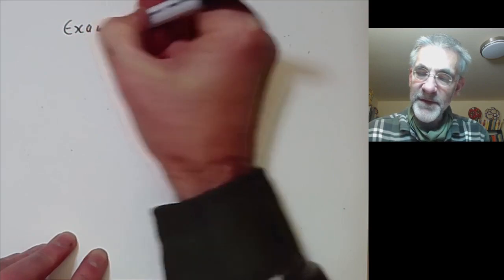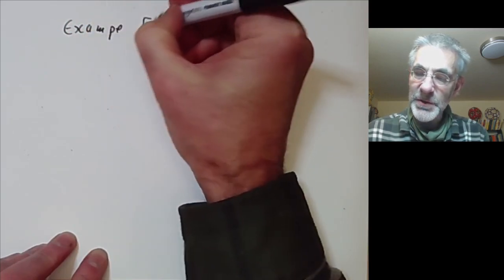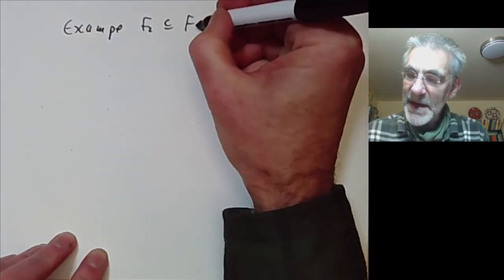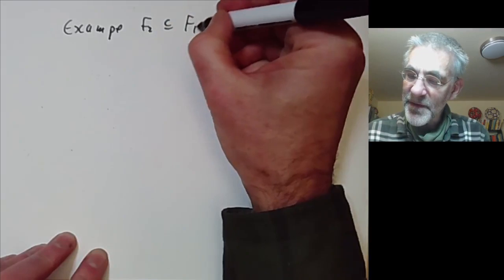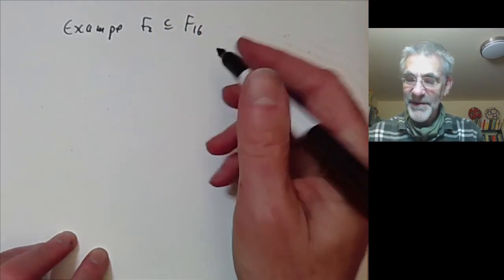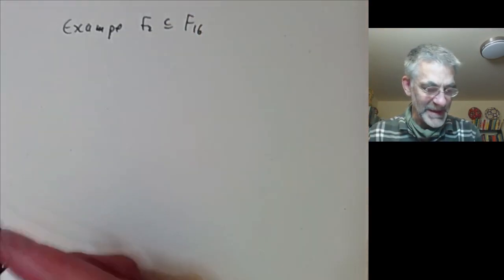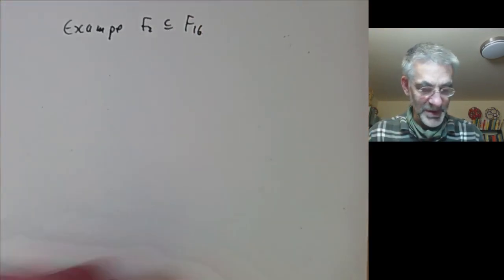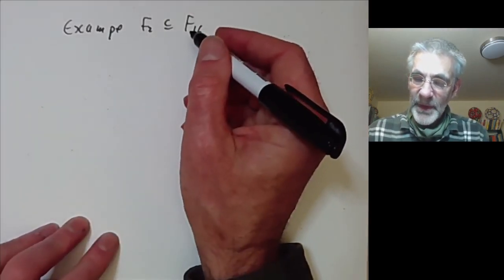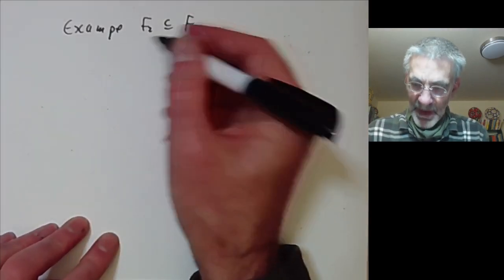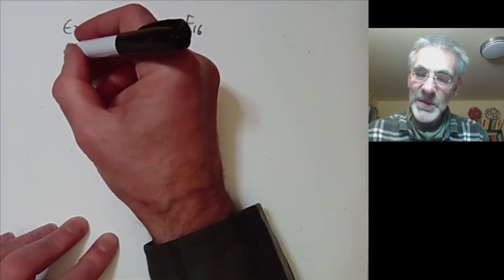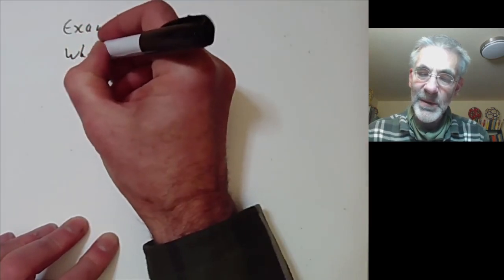Now let's look at the example of the field of order 2 contained in the field of order 16. The first thing we want to do is work out what the Galois group is.